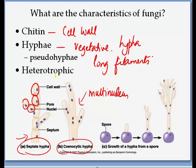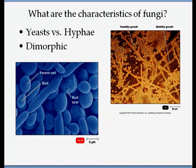Hyphae grow by elongating at their tips. When a fragment breaks it can initiate a new hyphae. This is the vegetative state. You can see them in molds — for example when bread goes bad you can see the fiber or hair-like structures, which are all hyphae.